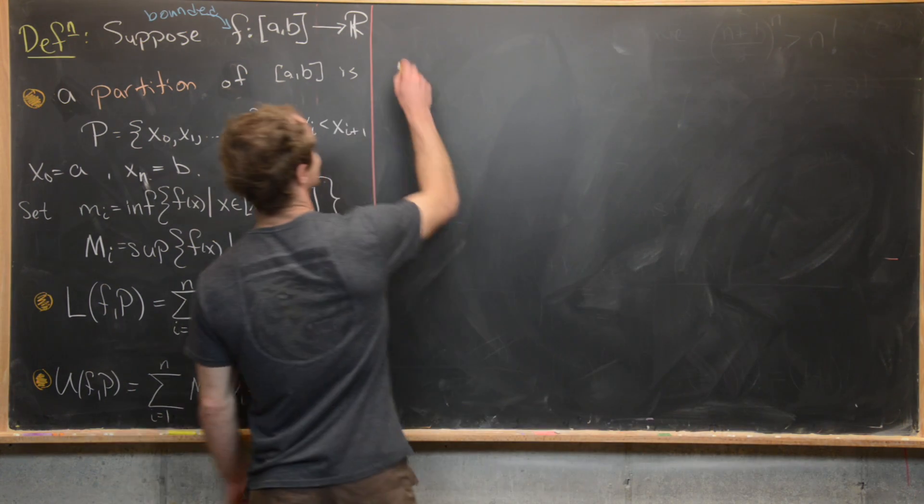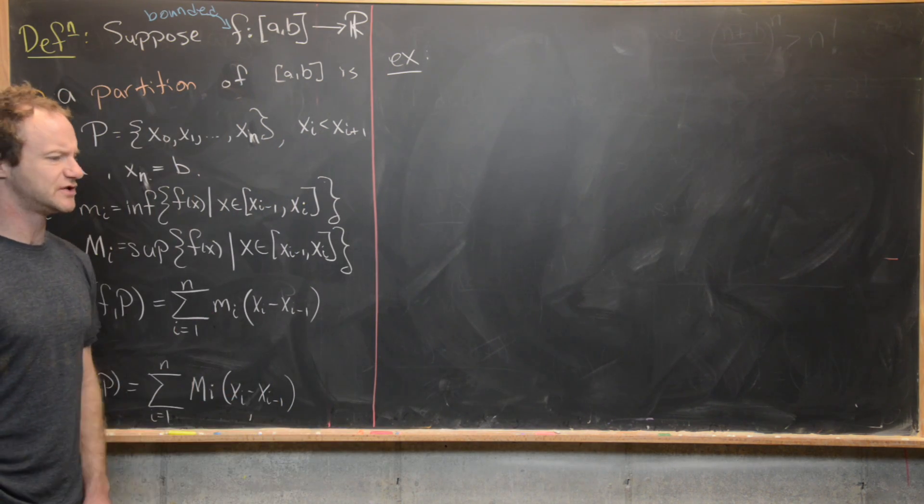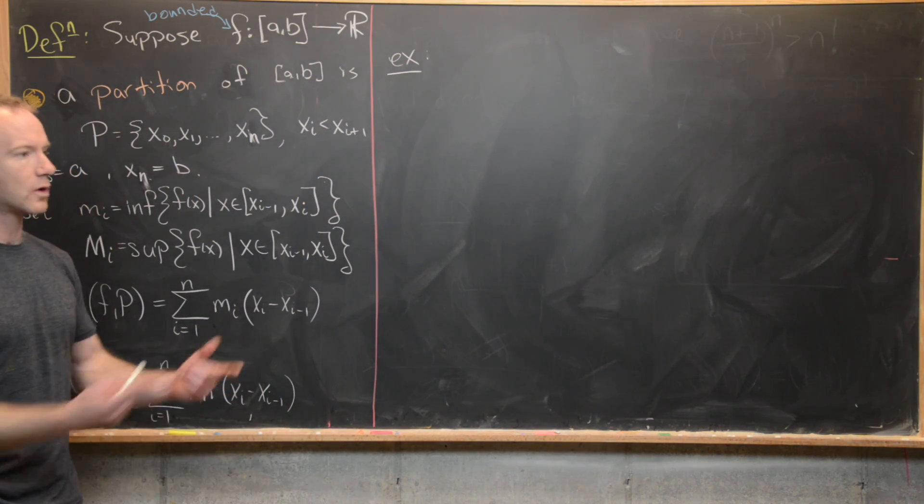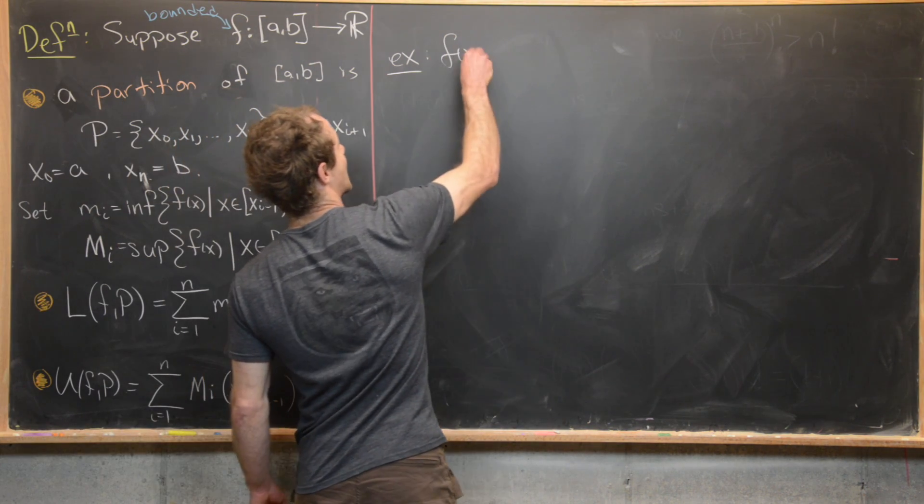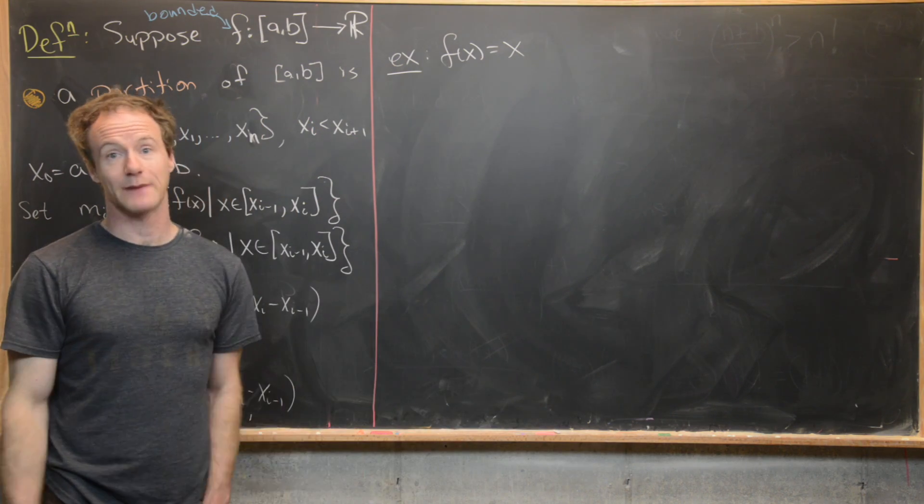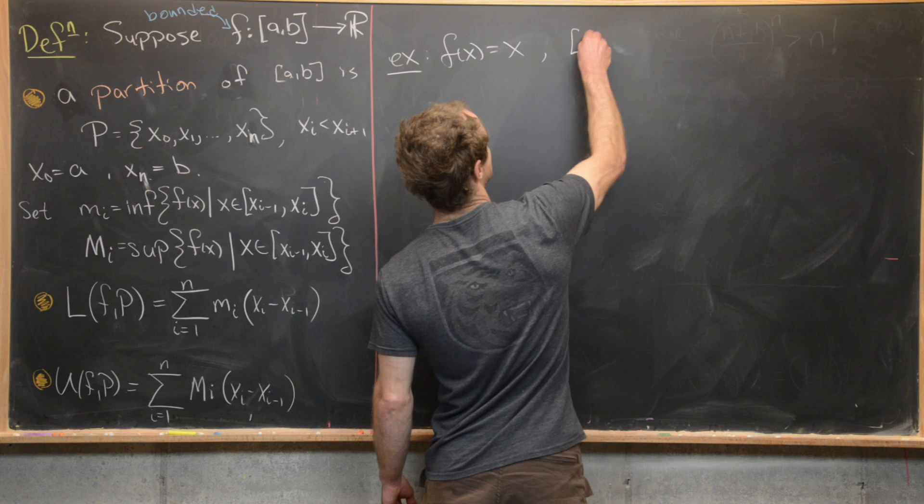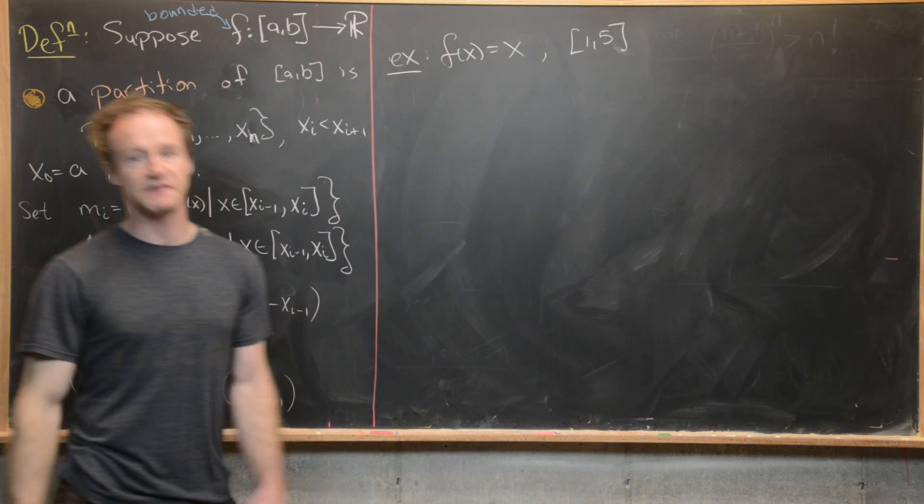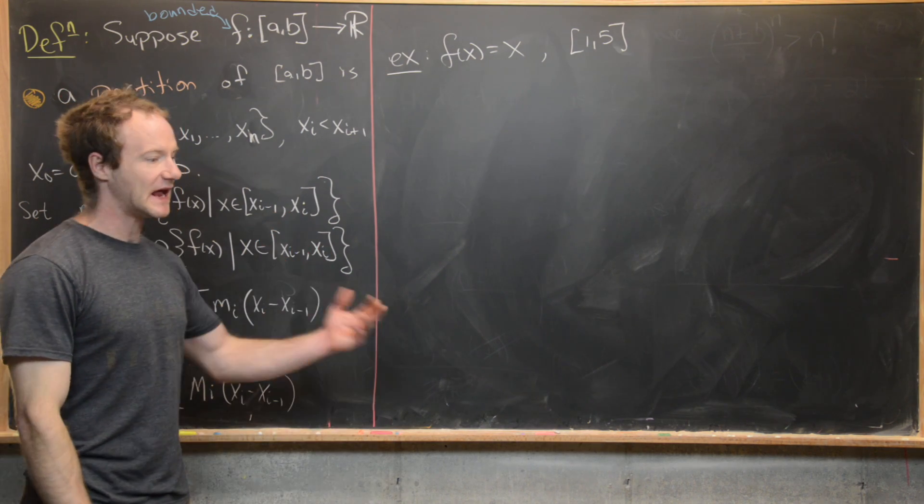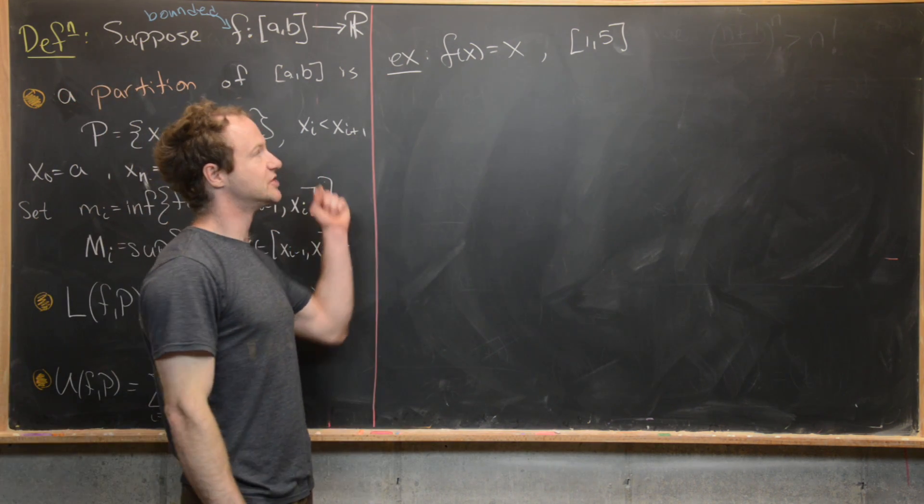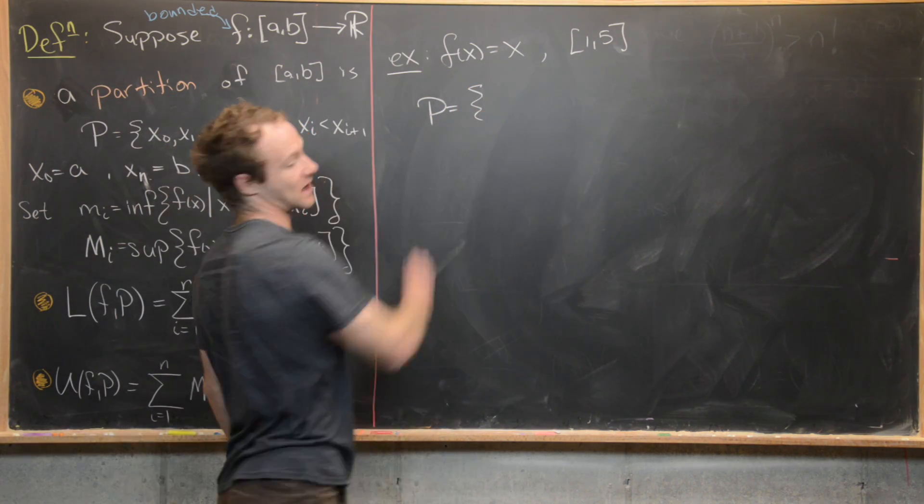Let's maybe go ahead and look at an example, like a really basic example of this. And then we'll move into some other important notions towards the definition of integrability. So let's look at maybe the function f(x) equals x. So that's perhaps as simple as it gets to provide an interesting example. And let's say we have the interval [1,5]. And then furthermore, we're going to need a partition of that interval. The partition can be any finite set of numbers that's increasing, starting at 1 and ending at 5.